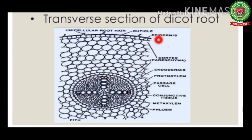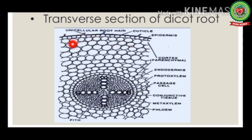The outermost layer is the epidermis, which in roots is called epiblema or peliferous layer. It is a single layer of thin-walled cells bearing numerous unicellular hair-like structures called root hairs, which are extensions of the epiblema cells and help the plant to anchor with the soil.